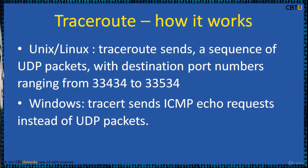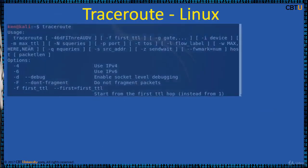How TraceRoute works: In Unix and Linux, TraceRoute sends a sequence of UDP packets with destination port numbers ranging from 33,434 to 33,534. In Windows, tracert sends ICMP echo requests instead of UDP packets. The Time to Live (TTL) value, also known as hop limit, is used to determine the intermediate routers being traversed towards the destination. TraceRoute sends packets with TTL values that gradually increase from packet to packet, starting from TTL value of 1. Routers decrement TTL values of packets by 1 and discard packets whose TTL value has reached 0, returning the ICMP time exceeded error message.